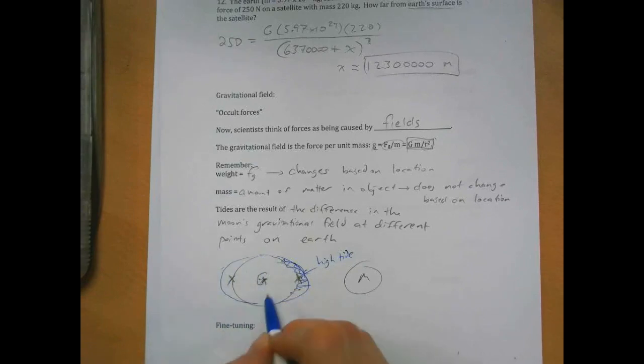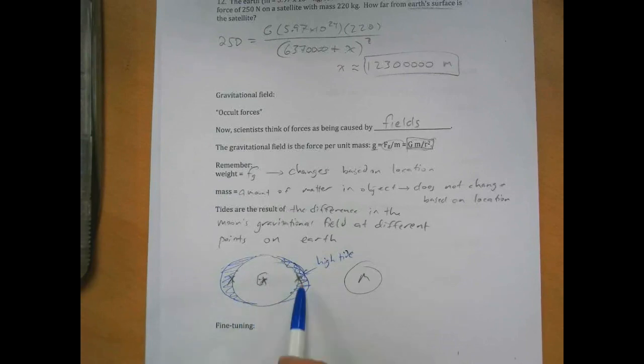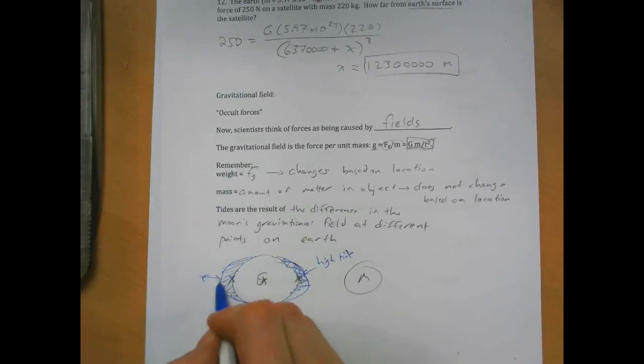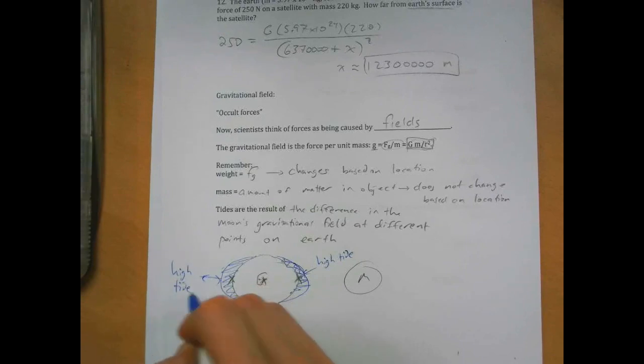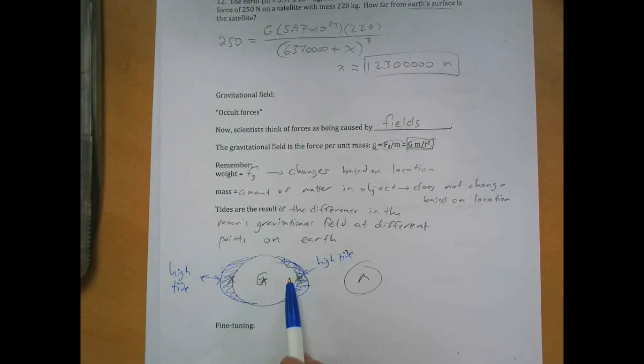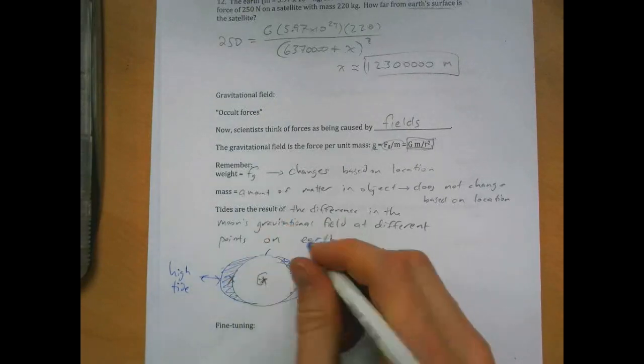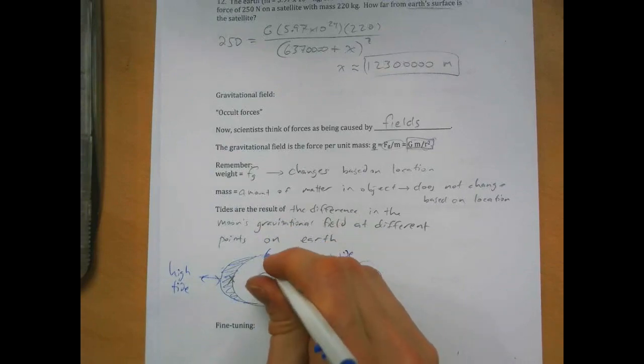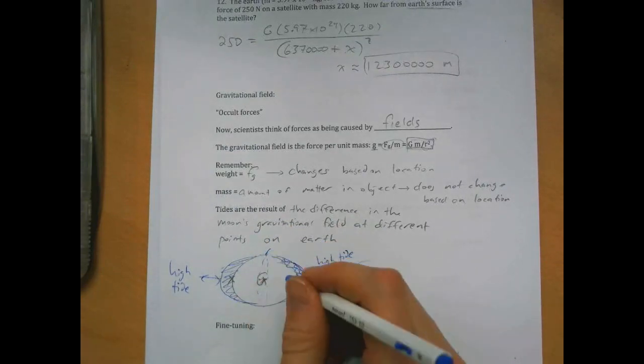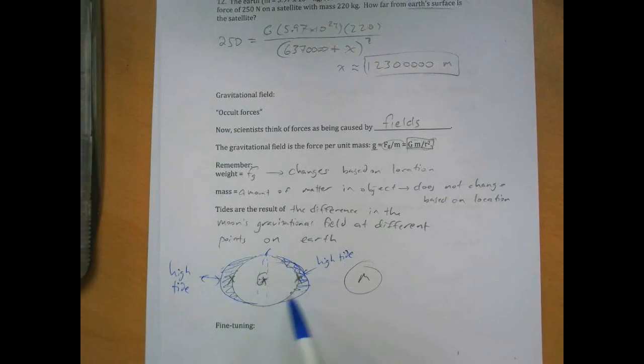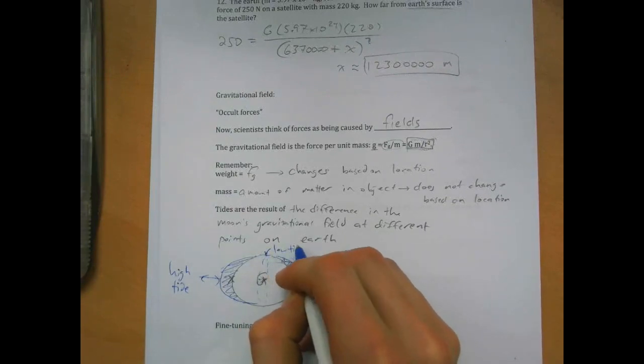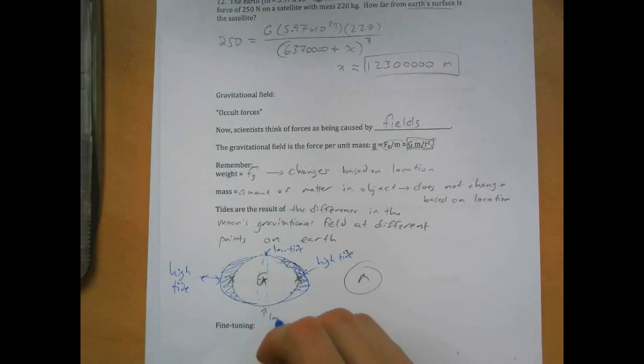So over here, the water kind of bulges outward as well, for a slightly different reason. And then because, over here we have another high tide. And then because the water is bulging out here, that water has to come from somewhere, and it's because it's flowing, it's free to move. So the water flows from places over here, and so at these points, and this is, because this is a sphere, this is really all along a circle here. Every point that's 90 degrees away from the highest tide, those points have low tides.